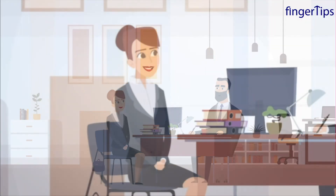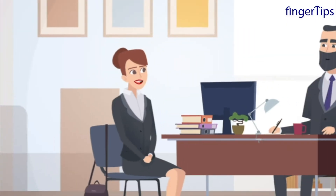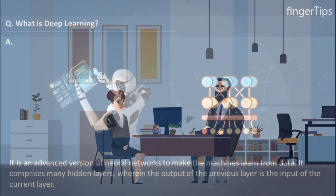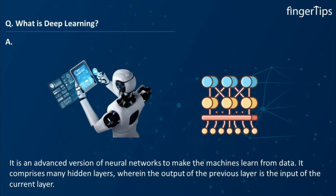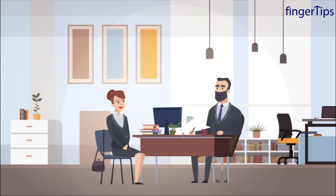What is deep learning? Deep learning is an advanced version of neural networks that makes machines learn from data. In deep learning, the neural network comprises many hidden layers that are interconnected to each other, and the output of the previous layer is the input of the current layer.